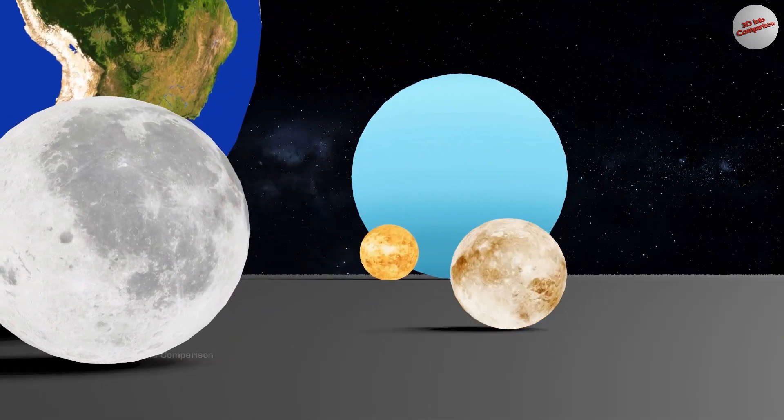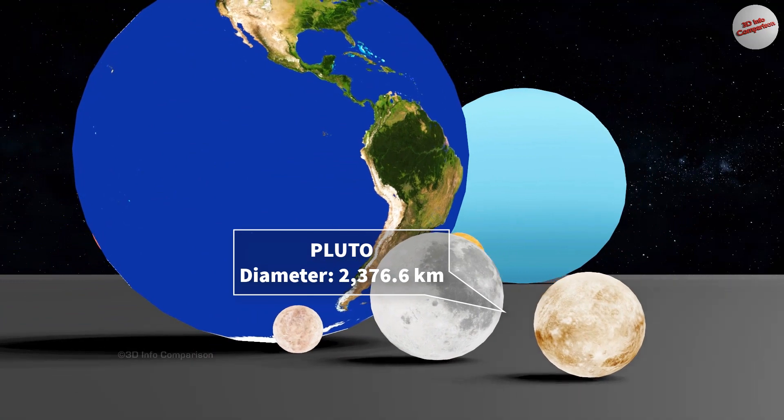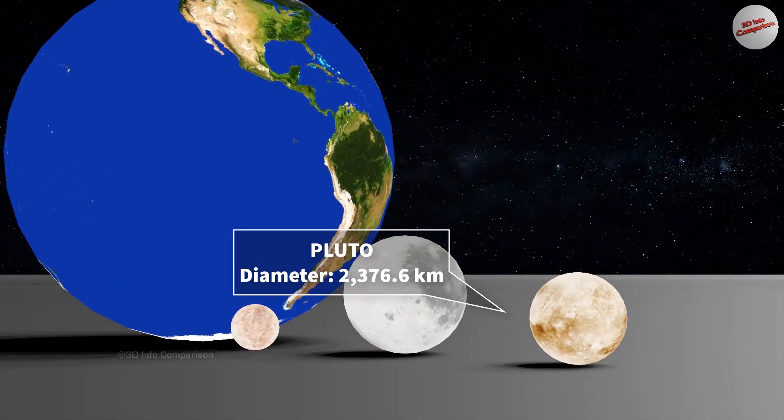Pluto is also a dwarf planet located in the Kuiper Belt. Its diameter is approximately 2,376 kilometers.